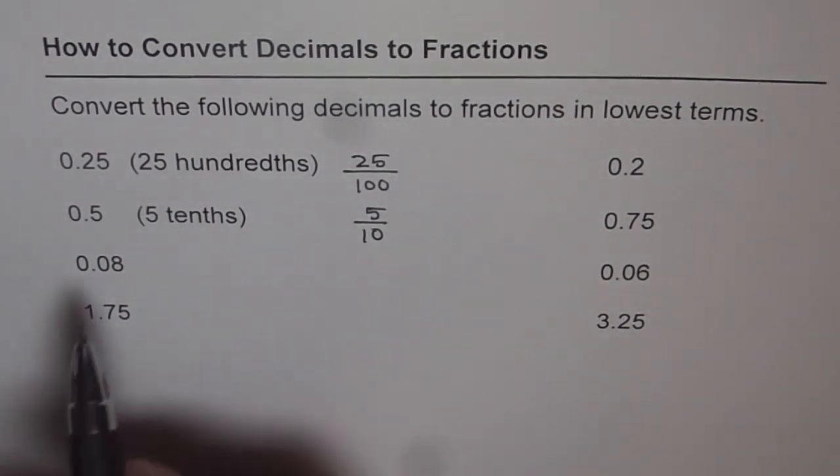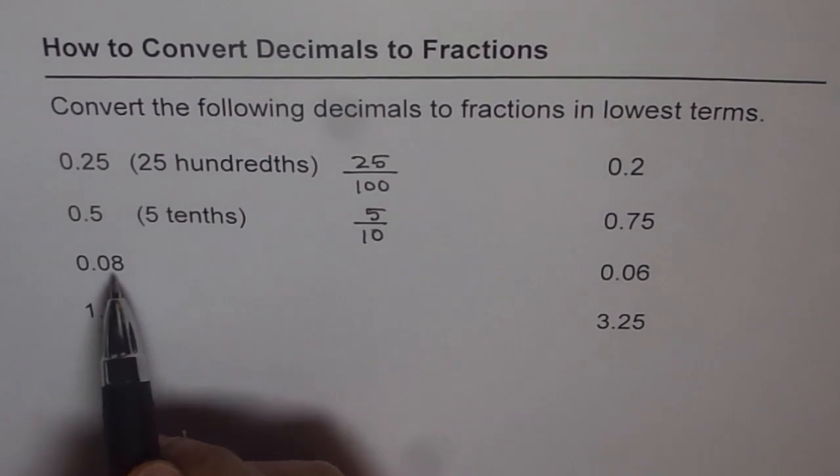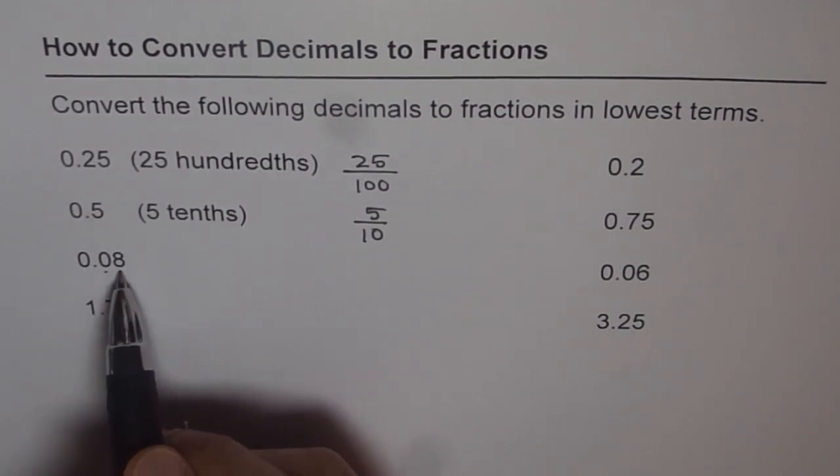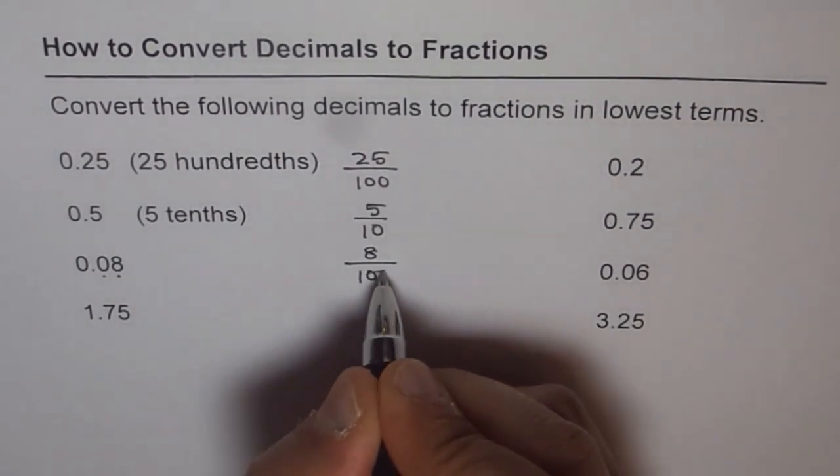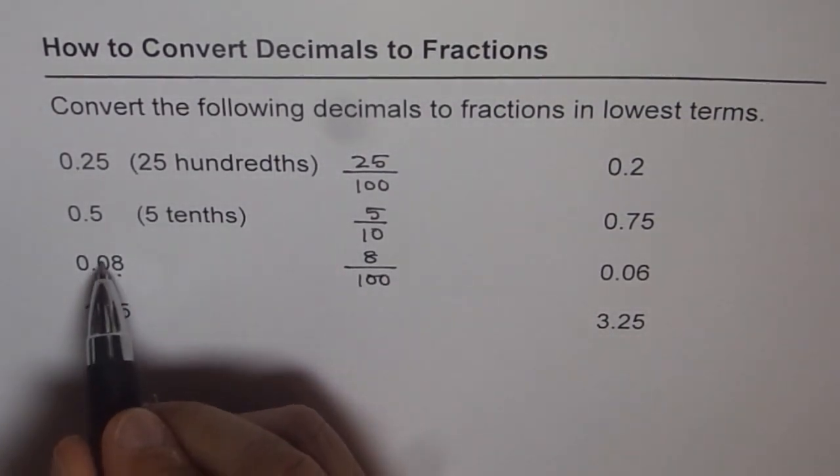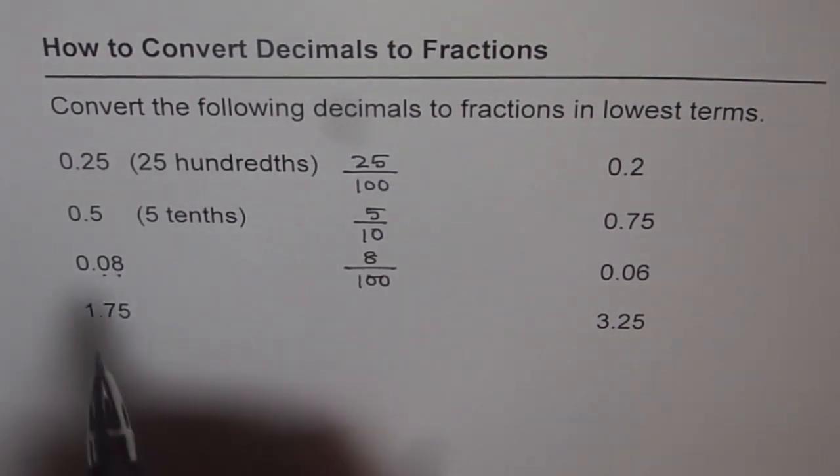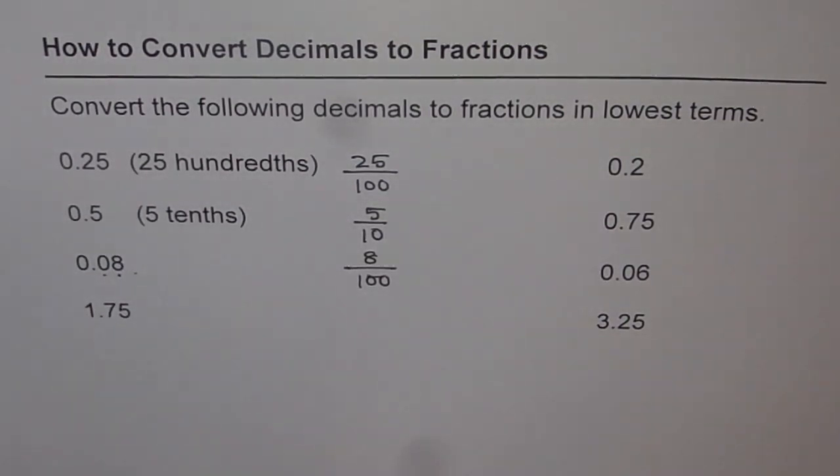Now with me tell me what is 0.08? Is it 8 tenths or 8 hundredths? Well after decimal this is the tenth place and that is the hundredth place. So it is 8 hundredths. That is tenths, hundredths. And after that it will be thousandths. So you get 8 out of 100.